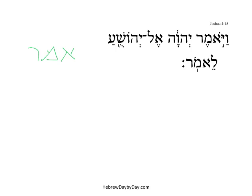Let's start with the first one: Vayomer. It is very, very common, driving forward narratives using this term. It's on practically every page of the Hebrew Scriptures.